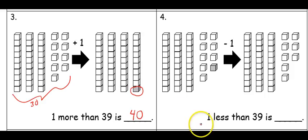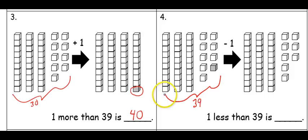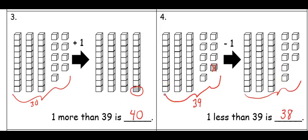Going across, I'm asked what is one less than thirty-nine. Again, I start off with thirty-nine cubes. I have three tens and nine cubes. I'm going to take this cube away to show one less, and that's represented by this picture. I still have three tens, but now I have eight cubes. Three tens and eight cubes would be thirty-eight. That means one less than thirty-nine is thirty-eight.